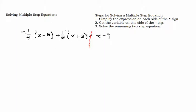I'm going to focus on the left-hand side and simplify this expression — combine like terms, do the distributive property. We'll start by distributing the one-fourth and the one-half. Negative one-fourth times x is negative one-fourth x. And negative one-fourth times 8: I'm going to think of this as negative 8, because subtraction is the same as adding a negative. So I'm doing negative one-fourth times negative 8.